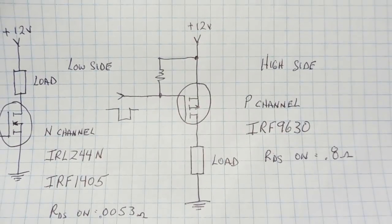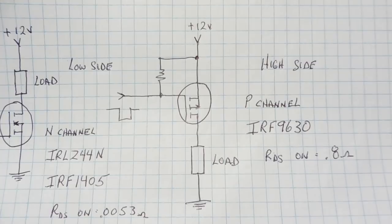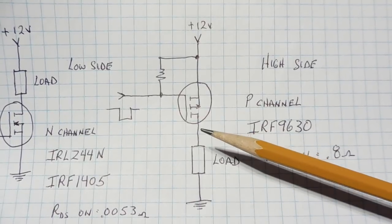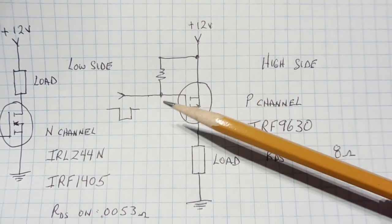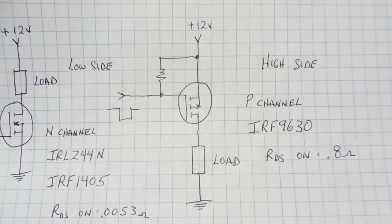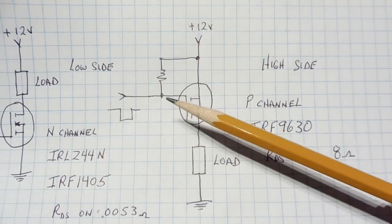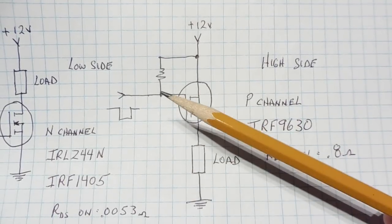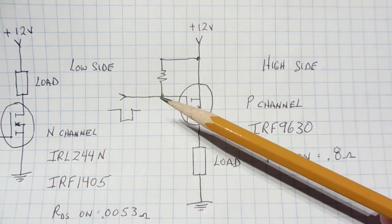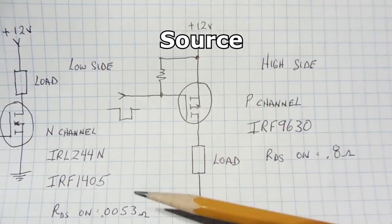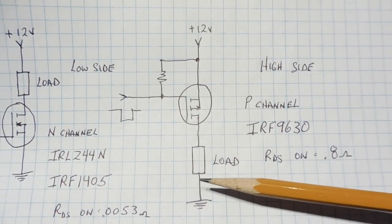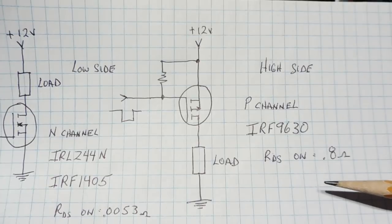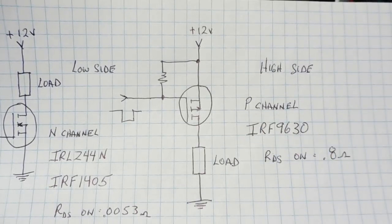Here's the schematic diagram of a high side switching circuit using a P-channel MOSFET, the IRF-9630. One side of the load is connected to ground; the other side is connected to the drain. The gate and source are connected together through a resistor, so they're at the same potential and the MOSFET is off. To turn on the MOSFET, we ground the gate, creating a 12-volt difference between gate and source, which turns on the P-channel MOSFET and energizes the load. However, the RDS (drain to source on resistance) is 800 milliohms, which is quite high compared to an N-channel MOSFET, so driving a heavy load may cause significant dissipation.